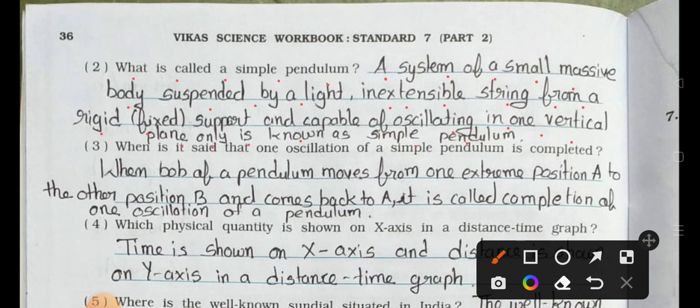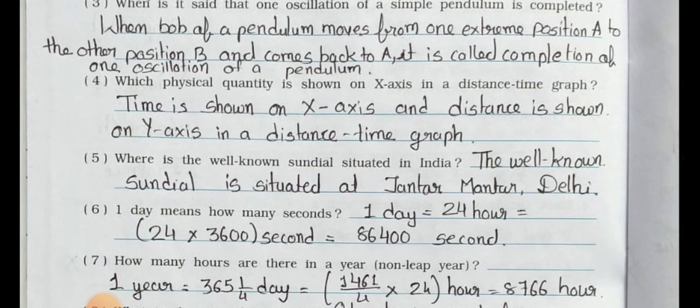Question number three: when is it said that one oscillation of a simple pendulum is completed? Answer is: when bob of a pendulum moves from one extreme position A to the other position B and comes back to A, it is called completion of one oscillation of a pendulum.